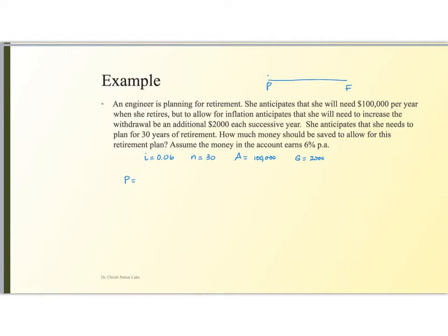And so when things start getting a little twisted in your mind about whether or not you're looking for present or future, just look on the number line and see, am I trying to go to the left of the screen or to the right of the screen? And that's going to determine whether it's a P or an F problem.